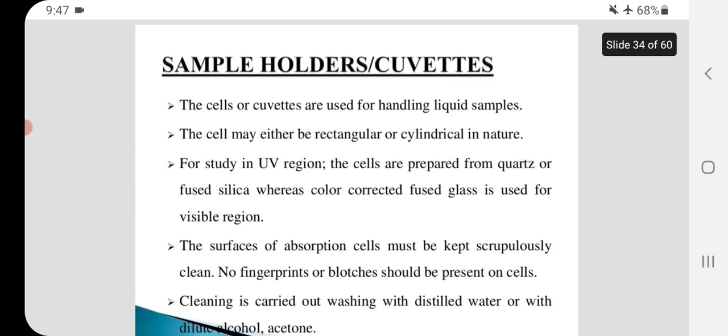Sample holders: The cells or cuvettes are used for handling liquid samples. The cell may either be rectangular or cylindrical in nature. For study in UV region, the cells are prepared from quartz or fused silica.